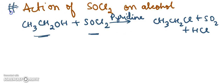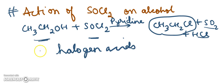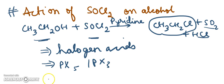This method using thionyl chloride is very important and preferred over other methods because the byproducts SO2 and HCl are gases that easily escape, leaving behind the pure alkyl halide. In summary, the three methods for preparing haloalkanes from alcohols are: first, the action of halogen acids; second, the action of phosphorous halides (PX3 or PCl5); and third, the action of SOCl2 on alcohol — which is the most preferred method.